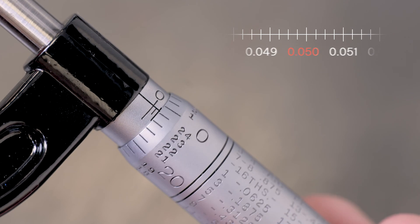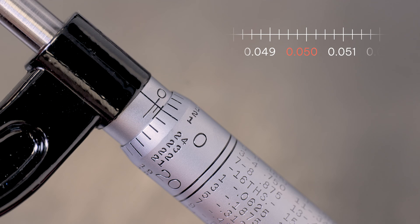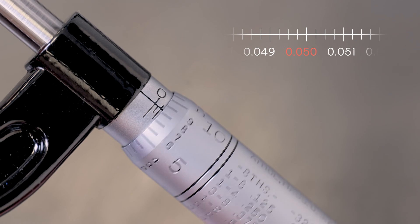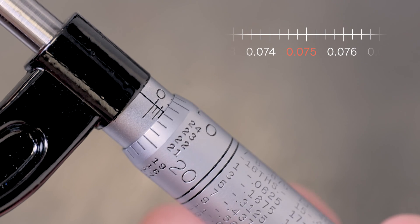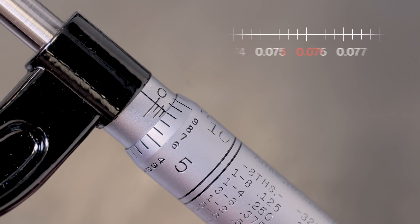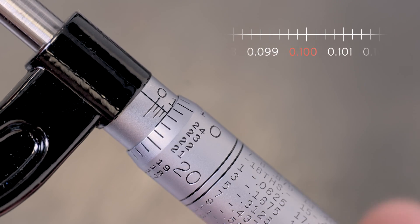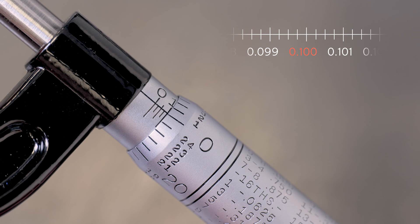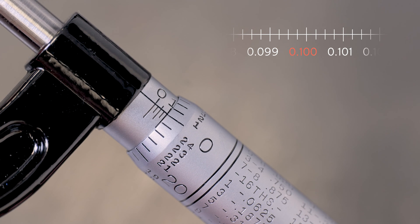One more full rotation will get me to 50 thousandths, and there's a second mark, another full rotation to 75, and a third mark, and a fourth rotation all the way back around. And I can see the one emerging here. That would be 100 thousandths of an inch.